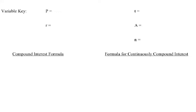So our compound interest formula is A equals P times the quantity 1 plus R divided by N, all raised to the Nt power.